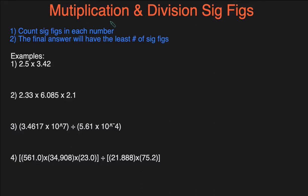Hey guys, it's Michael from Calico Chemistry. In today's video, we'll be covering the sig fig rules for calculations involving multiplication and division. I have a couple examples here and we have the rules here. We'll go over the rules briefly and then take a look at the examples. The rules are: first count the number of sig figs in each number, and then your final answer should have the least number of sig figs. This makes a lot more sense when we look at examples, so let's jump straight into it.